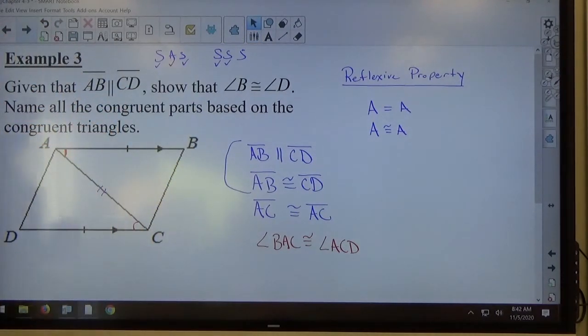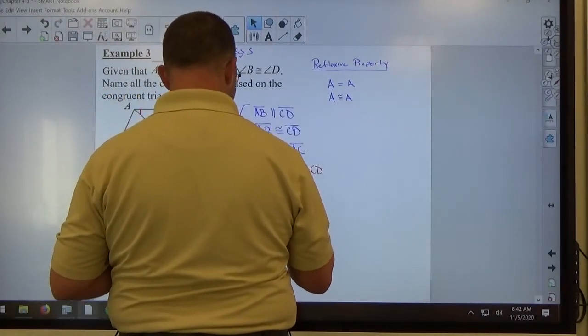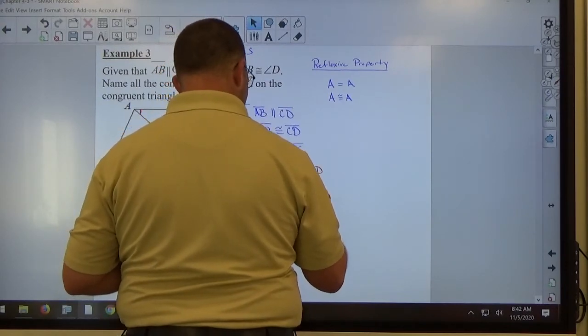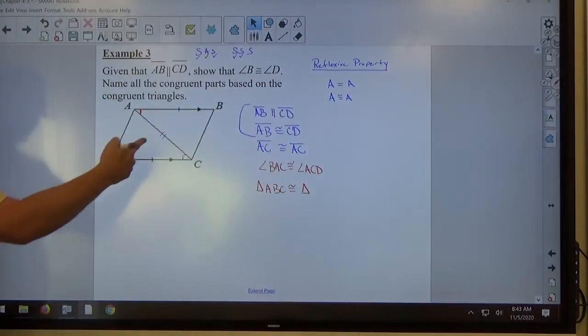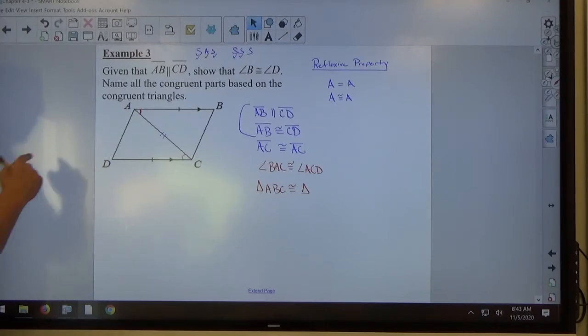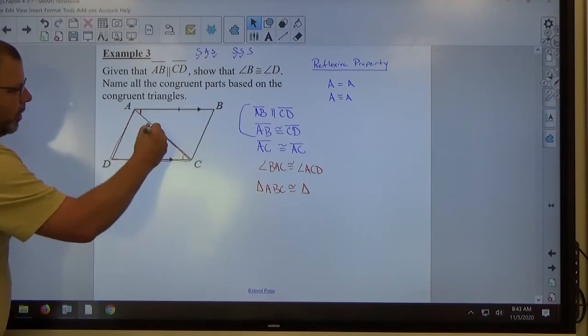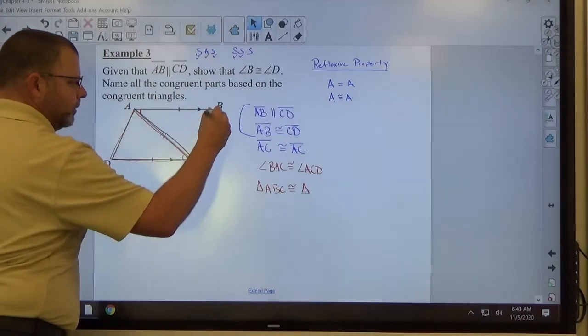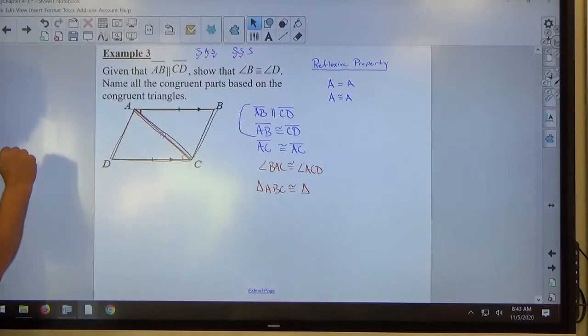All right, so what in triangle, in the other triangle, what matches up to A? Which angle in this triangle? So we have this triangle here, ACD, and we have this triangle here, ACB. All right, so the black triangle's ABC and the red triangle's ACD.